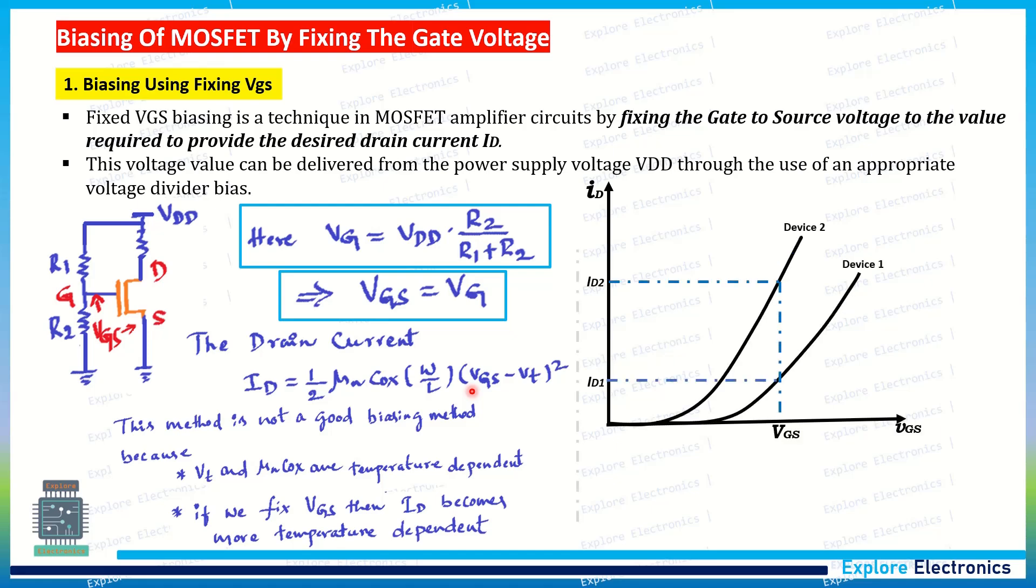You can see here in the ID versus VGS curve also. In x-axis I have taken VGS, in y-axis we have taken ID. This capital VGS corresponds to the gate to source biasing voltage what we are fixing now. This small vgs corresponds to the variation in the total VGS with respect to the amplifier voltage parameter. When VGS is constant, because of the two different temperatures of device 1 and device 2, you can see the large variation in ID1 and ID2. We cannot keep the ID constant in an amplifier circuit. This is the disadvantage of this fixing the gate voltage.